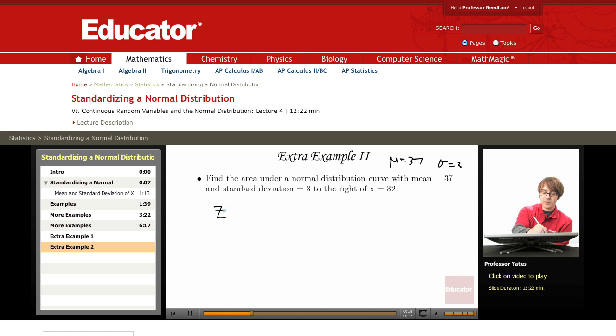So I first want to find the z-score. So I'm taking my observation, 32, minus the mean, 37, divided by the standard deviation, 3. This gives me negative 1.67.